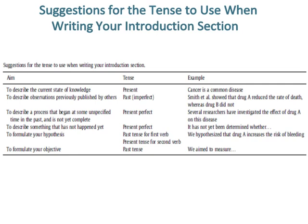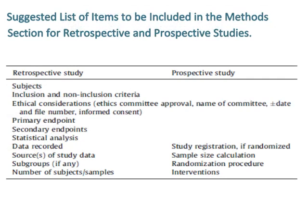To formulate your objective, use the past tense — for example, 'we aim to measure.' Suggested items to include in the methods section for retrospective and prospective studies: retrospective studies should include subjects' inclusion and non-inclusion criteria, ethical considerations, ethics committee approval (name of committee, date, and file number), informed consent, primary and secondary endpoints, statistical analysis, data recorded, sources of study data, subgroups if any, and number of subjects or samples. Prospective studies additionally include study registration, and if randomized, sample size calculation, randomization procedure, and interventions.